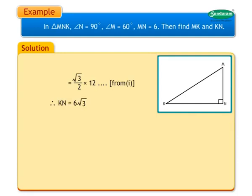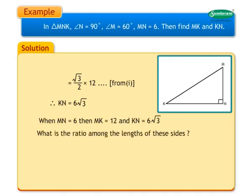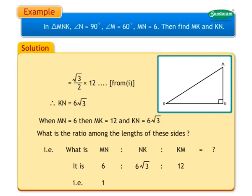In the above example, we found that when MN is equal to 6, then MK is equal to 12 and KN is equal to 6 root 3. The ratio among the lengths of these sides is MN to NK to KM is equal to 6 to 6 root 3 to 12, that is, 1 to root 3 to 2.